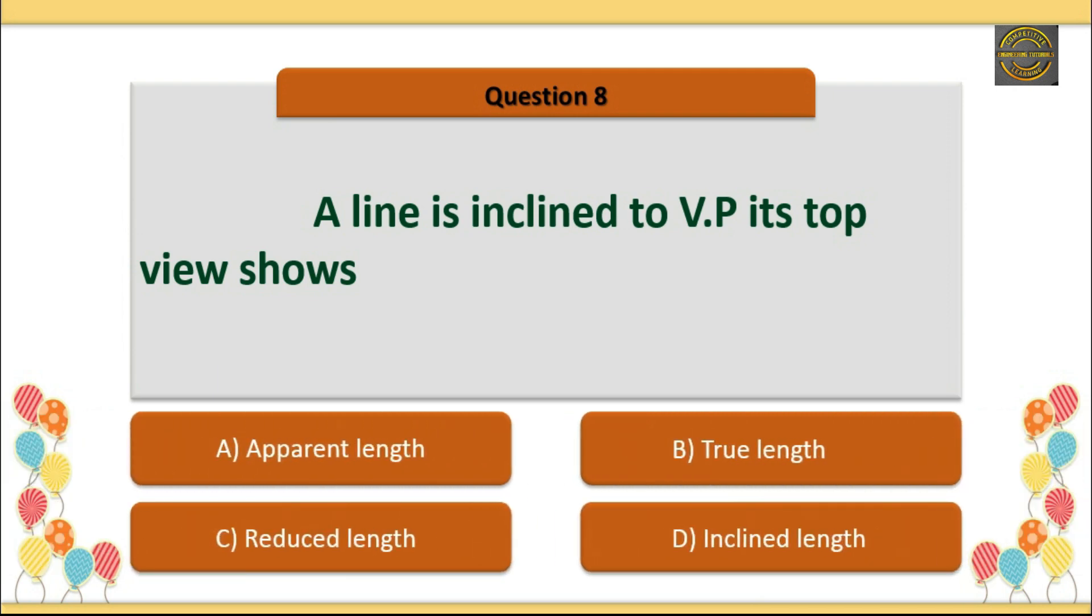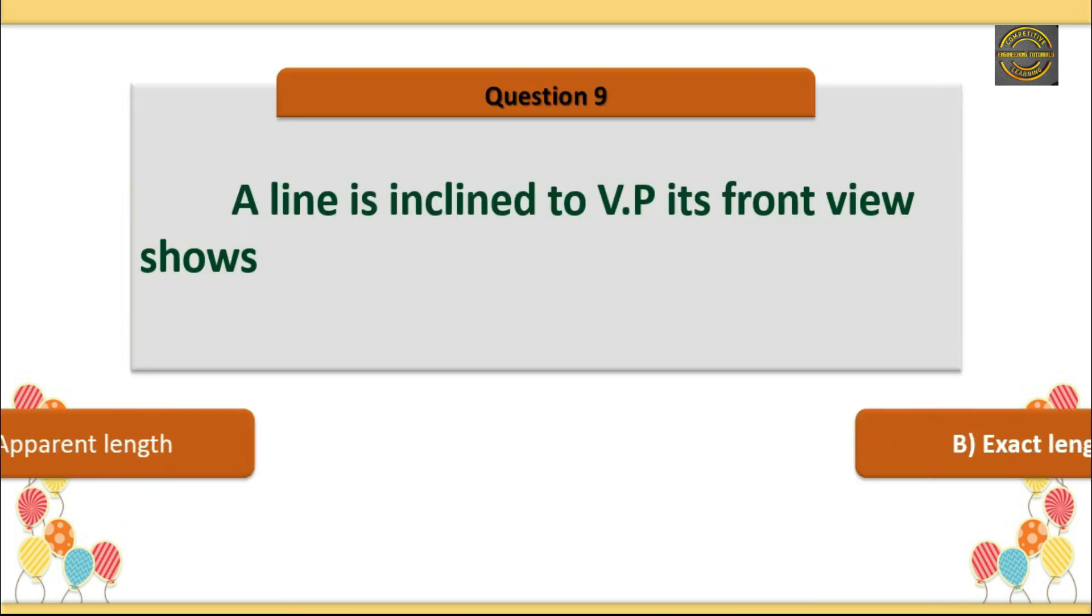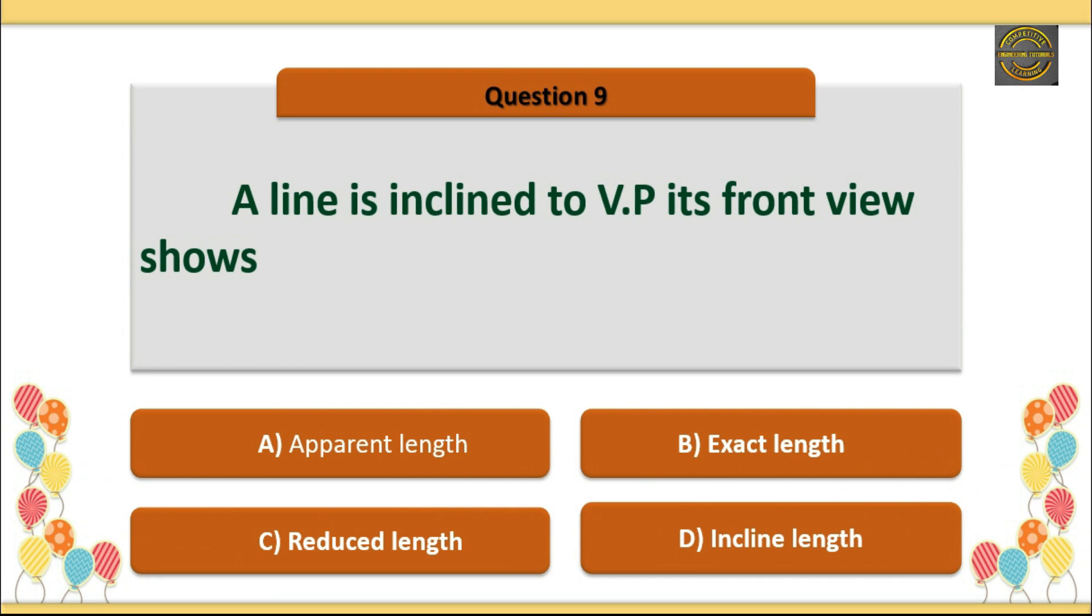Question 8: A line is inclined to VP. Its front view shows? Option B is correct: True length. Question 9: A line is inclined to VP. Its front view shows? Option A is correct: Apparent length.